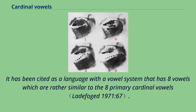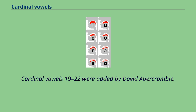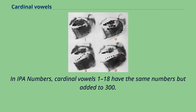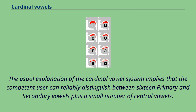Cardinal vowels 19 to 22 were added by David Abercrombie, with IPA numbers for cardinal vowels 1 to 18 retaining the same numbers but with 300 added. The usual explanation of the cardinal vowel system implies that a competent user can reliably distinguish between 16 primary and secondary vowels, plus a small number of central vowels.